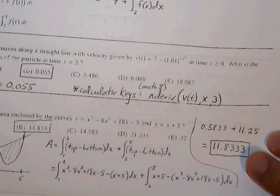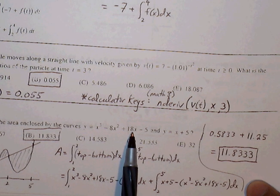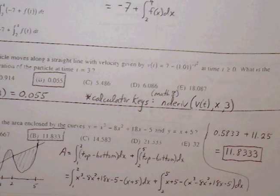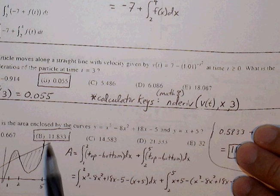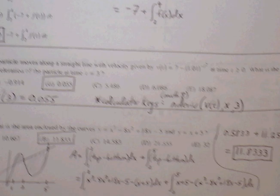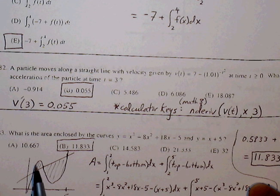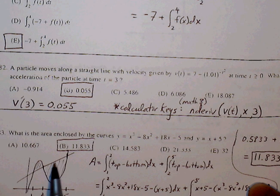83, what is the area enclosed by the curves? y equals x cubed minus 8x squared plus 18x minus 5, and y equals x plus 5. So if we graph, we see that we have a curve and we have a straight line. And if I want to find the area enclosed, then I have to be able to split this up into two definite integrals because the upper and lower bounds are going to flip-flop at this intersection.